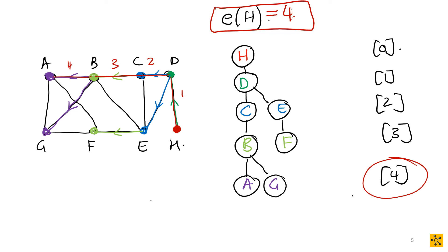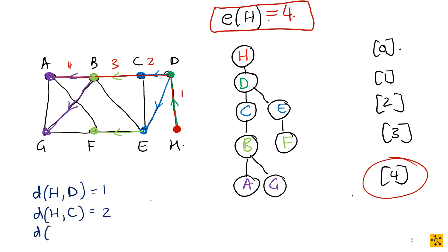From this Moore's breadth-first search tree you can read off all the individual distances: the shortest distance from H to D is one, from H to C is two, from H to B is three, and so on for every single vertex. The eccentricity is simply the longest of all these shortest paths.